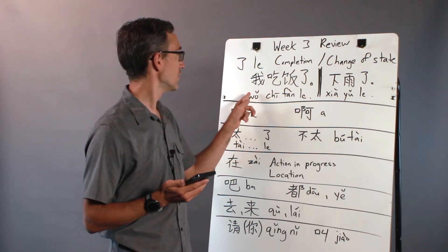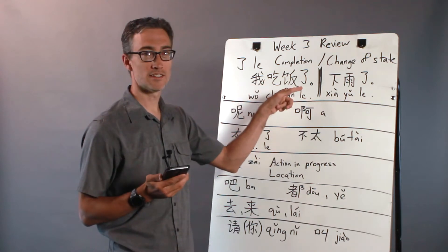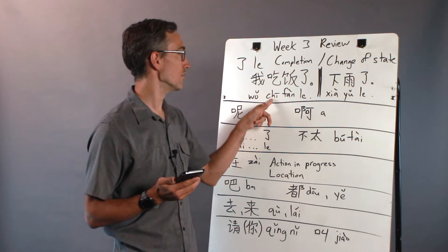So 我吃饭了, I have eaten. Or you can say 我吃了饭. The la can go at the end of the phrase or right after the verb.